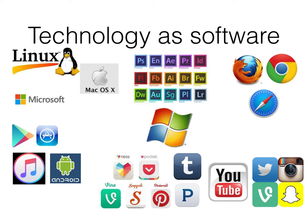Software can be thought of as the variable part of the computer and hardware as the invariable part. Software can be divided into application software — programs that do work users are interested in, such as the Adobe suite or Microsoft Windows — and the operating system or system software, which includes any program that supports application software. Examples include Microsoft Windows, Mac OS X and Linux. The term middleware is sometimes used to describe programming that mediates between application and system software, or between two different kinds of application software — for example, sending a remote work request from an application on one operating system to one on a different operating system.